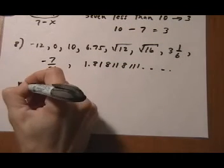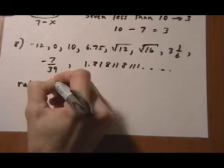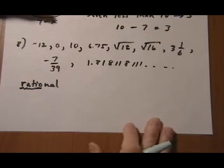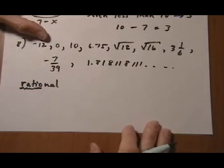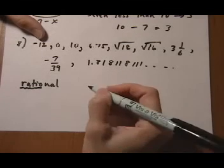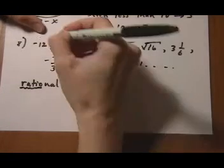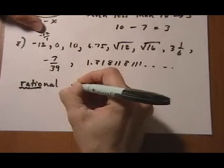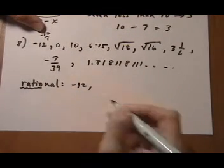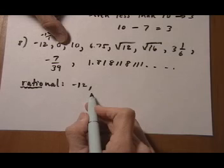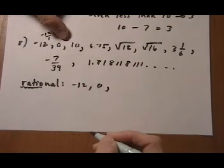So to find the rational numbers, keep in mind the word ratio. A rational number is a number that can be expressed as a fraction of two integers. So first we look at minus 12. And minus 12 could be expressed as minus 12 over 1. So yes, it's a rational number. So let's list all the ones that are rational numbers here to the right. 0 could be written as 0 over 1, so it's rational.